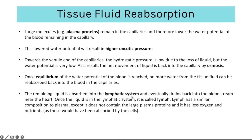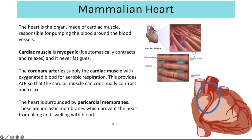As tissue fluid moves into the lymphatic system it is called lymph — lymph is very similar to plasma except it doesn't contain large plasma proteins or some blood cells. The mammalian heart is an organ made up of cardiac muscle responsible for pumping blood around the body. Cardiac muscle is myogenic, meaning it automatically contracts and relaxes and will never fatigue — a key difference from skeletal muscle.